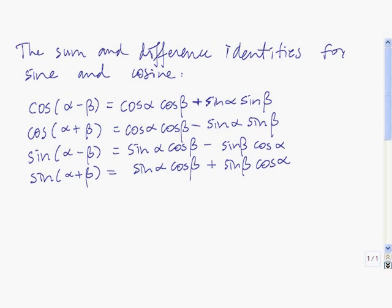Here we're going to talk about the sum and difference identities for sine and cosine. You can get the analogous ones for tangent just by taking the one for sine and dividing by the corresponding one for cosine. So tangent of alpha minus beta would be this identity divided by this identity. Take a moment while you copy these down and then we'll use them to solve problems.